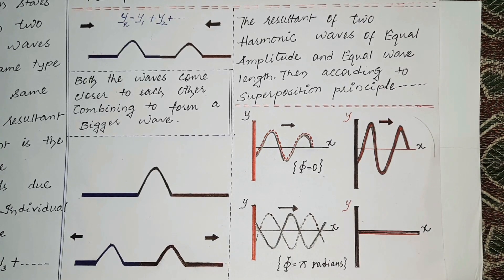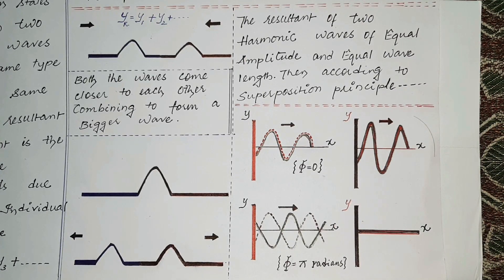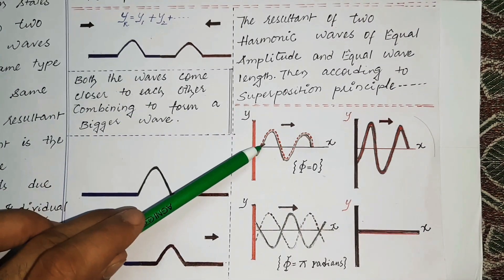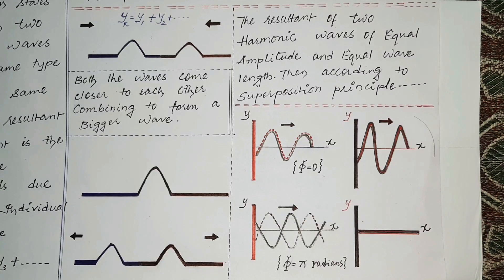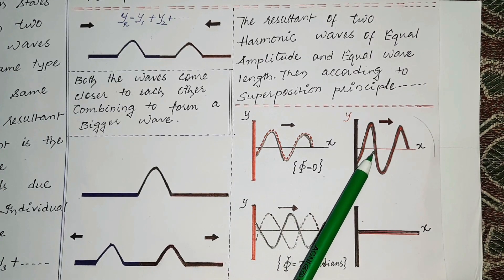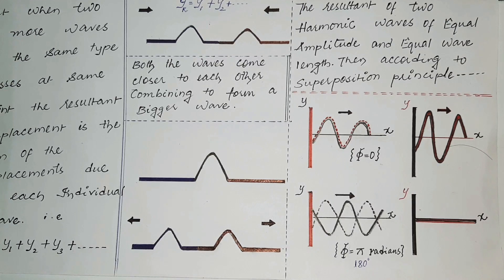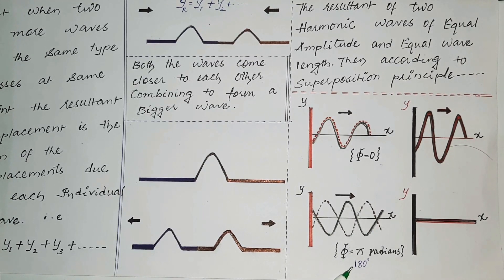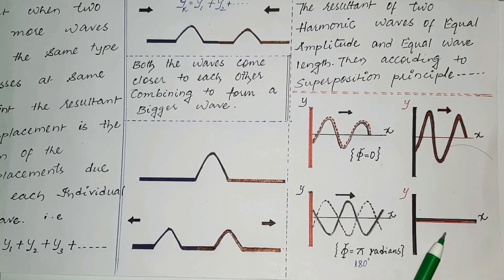Let's look at the resultant displacement when two waves are combined. In the first example, two waves have the same amplitude and same wavelength with a phase difference of zero — no difference in their phase — so when they are added together the amplitude increases. In the second case, two waves have the same amplitude and wavelength but a phase difference of 180 degrees, so the displacement of the first is cancelled by the second, and the resultant displacement equals zero.